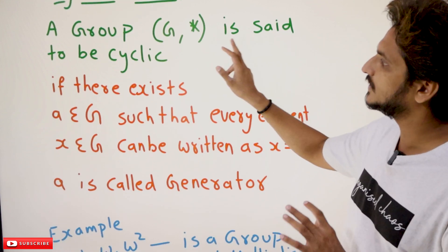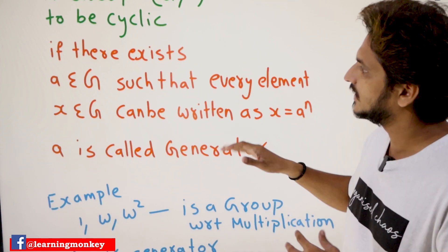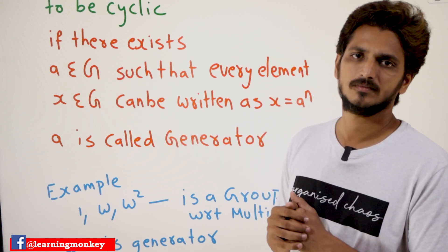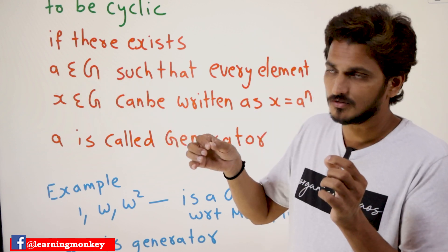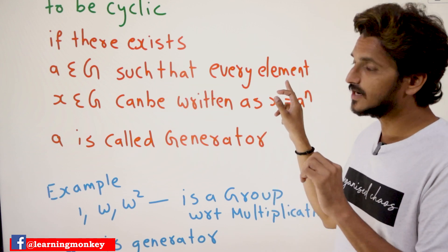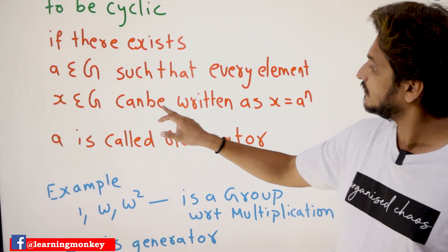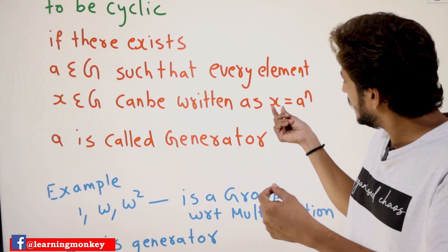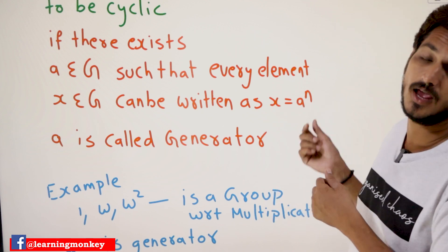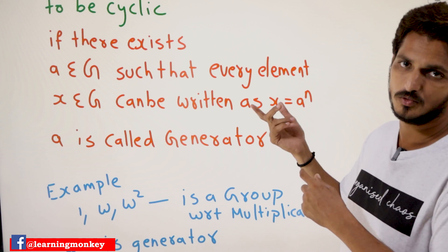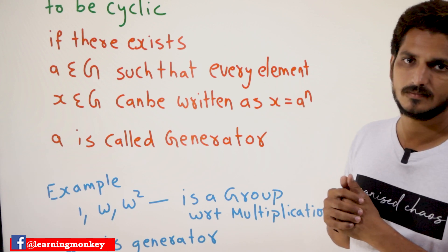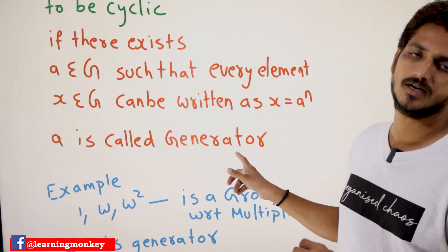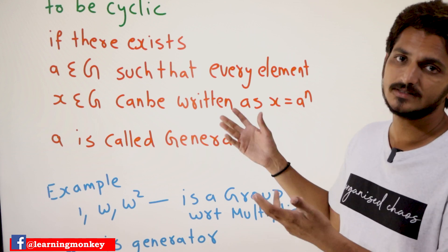A group G star is said to be cyclic if there exists an element A belonging to G such that every other element X belonging to G can be written as X = A^n. Every other element can be written as A^1, A^2, A^3, A^4, and so on. If you are able to write that, then A is called a generator. If this happens, then we say it is a cyclic group.